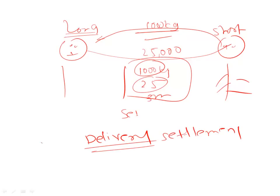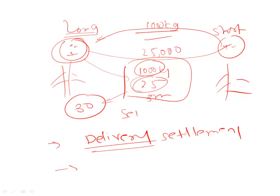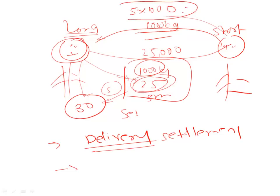As against this, the alternate way of settlement: suppose the market price of potatoes turns out to be Rs.30. This contract is more beneficial to the long because it can buy at Rs.25 instead of Rs.30 — a benefit of Rs.5. What the short could say is: instead of delivering the quantity, I will simply pay you 5 × 1000 = Rs.5,000, and the contract would be settled.